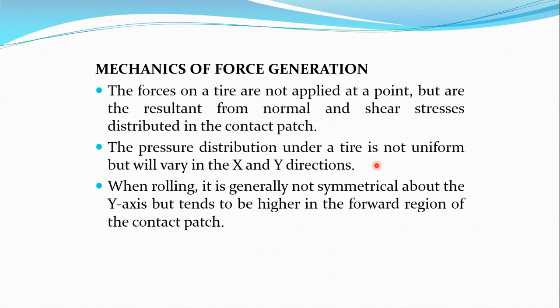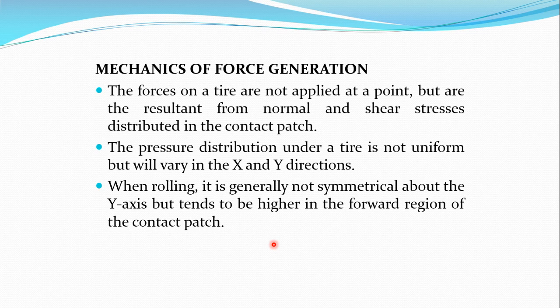Due to the non-uniform pressure distribution, there is an unsymmetrical type of region. Under rolling conditions, the pressure distribution is specifically non-uniform in the y direction, that is the lateral direction. It tends to be higher in the forward region of the contact patch. This non-uniform distribution means it is not mandatory for it to always be uniform — there will be a non-uniform pressure distribution, and due to that some forces will act.